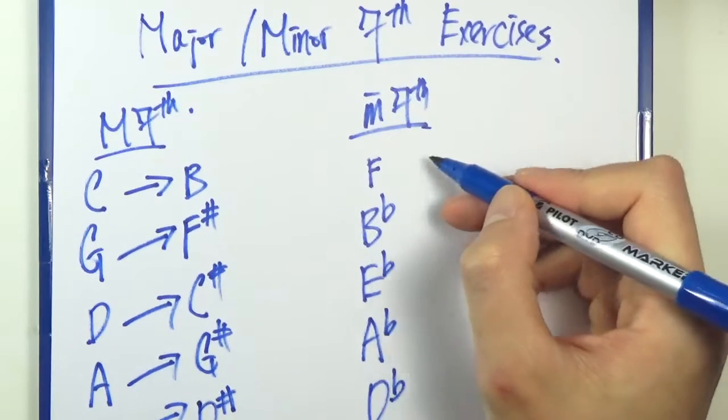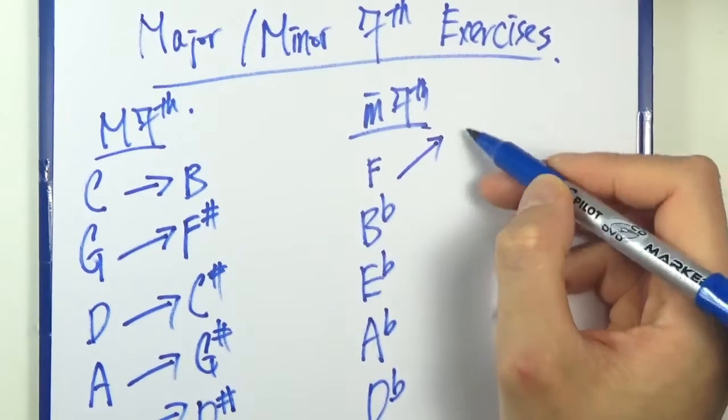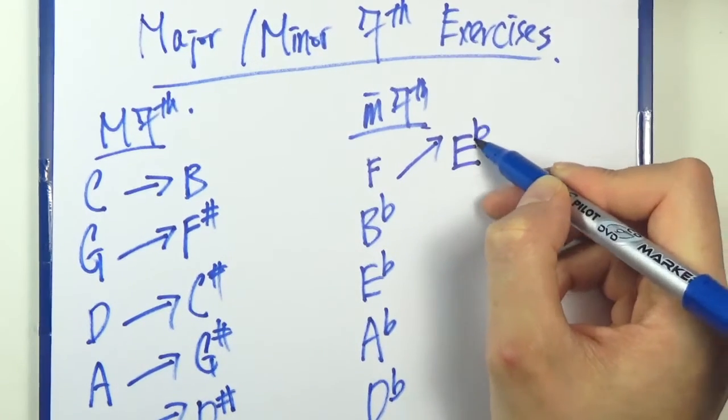Minor 7th. F. So you will count backward by a whole step this time. So F, half step backward. I'm sorry, whole step backward should be E flat, right?